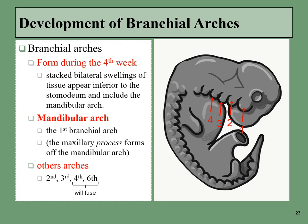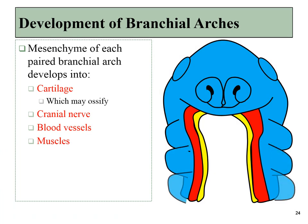Let's move on and talk about these branchial arches in more detail. They begin forming during the fourth week of development. The first one to form is the mandibular arch, and then like so many other things in the embryo, they continue to develop in an anterior to posterior direction, and we simply give them numbers as we move posteriorly. The branchial arches develop because of localized growth factors triggering the proliferation of mesenchyme — a tissue mostly derived from the mesoderm layer. This mesenchyme can develop into cartilage tissue, some of which may later undergo endochondral ossification to turn into bones. Other mesenchyme turns into the cranial nerves, important blood vessels, and muscles in and around the pharynx.